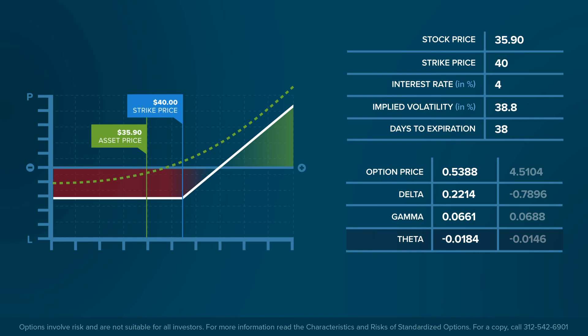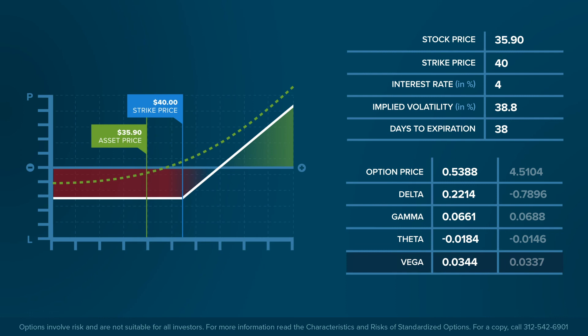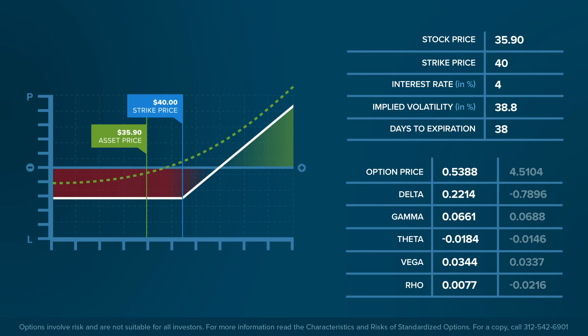The reading of minus 0.0184 for Theta tells us that the value of the option contract drops approximately 1.8 cents for each day that passes. The Vega of 0.0344 tells us that if implied volatility were to increase from 38.8% to 39.8%, the value of the option would increase by approximately 3.4 cents. The reading of 0.0077 for Rho tells us that if interest rates were to increase from 4% to 5%, the option's value would increase by approximately 0.077 cents.